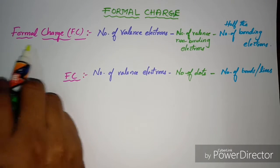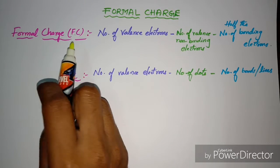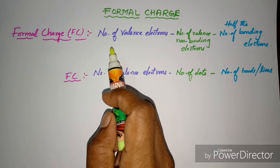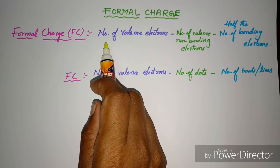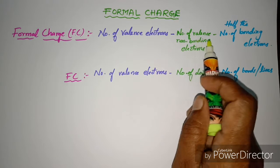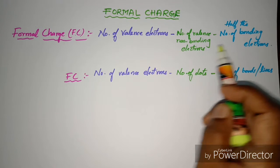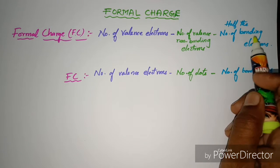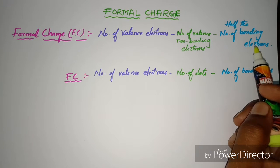Now, the formal charge can be calculated in two ways. The first way is: number of valence electrons minus number of valence non-bonding electrons minus half the number of bonding electrons.